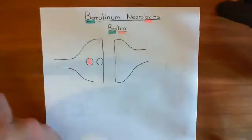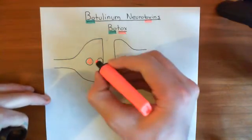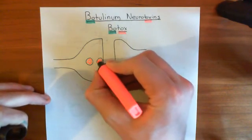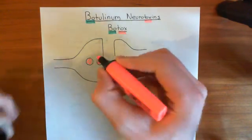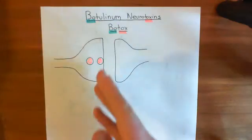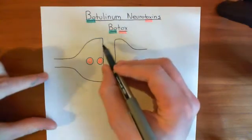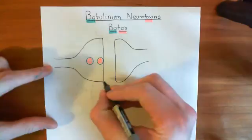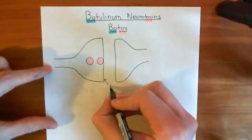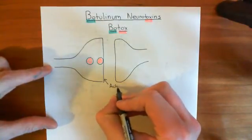When an action potential comes along, how is this vesicle actually released? Let's begin with the process of how we actually dock the vesicle onto what's known as the active zone membrane.